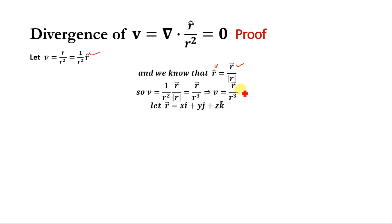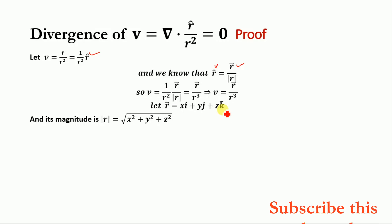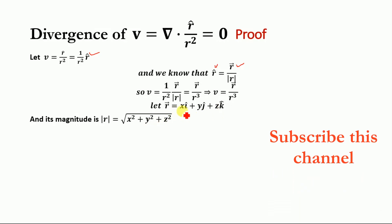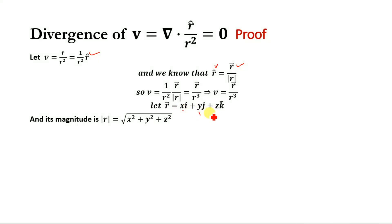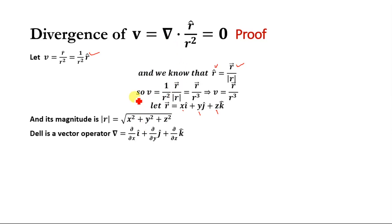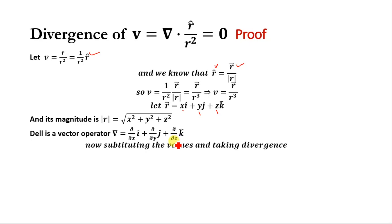Let r⃗ = xi + yj + zk. The magnitude of r is the square root of x² + y² + z². The del operator is a vector operator equal to (∂/∂x)i + (∂/∂y)j + (∂/∂z)k.